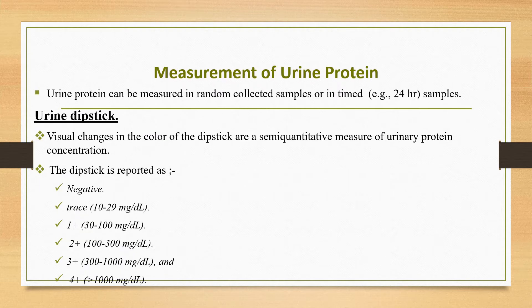There are different ways of measuring urine protein. Urine protein can be measured in random collected samples or in timed 24-hour samples. The first method is the urine dipstick. The total protein concentration in urine can be estimated with chemically impregnated plastic strips containing a pH-sensitive colorimetric indicator that changes color when negatively charged proteins bind to it. The dipstick primarily detects albuminuria and is less sensitive for other forms of protein, such as low molecular weight proteins and gamma globulins.